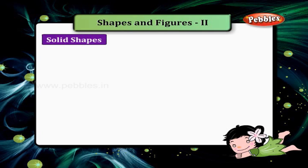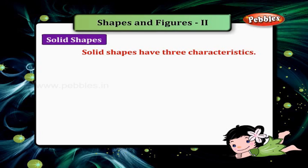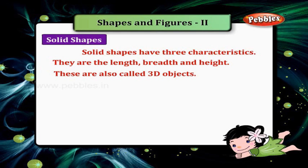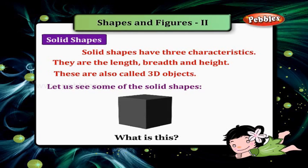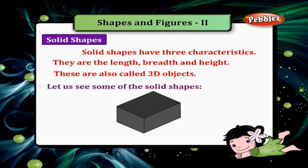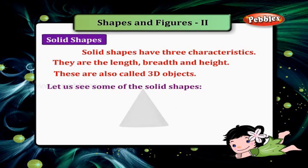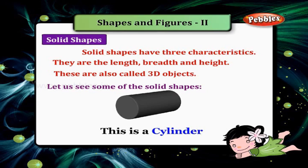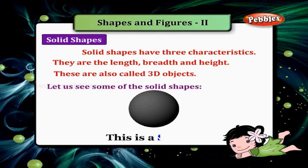Solid shapes have three characteristics: they are length, breadth, and height. These are also called 3D objects. Let us see some of the solid shapes. This is a cube, and this is a cuboid. This is a cone, this is a cylinder, and this is a sphere.